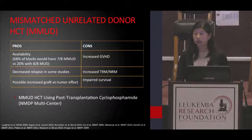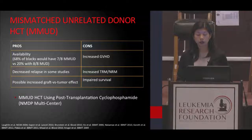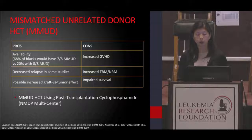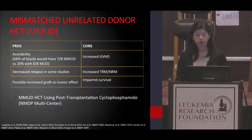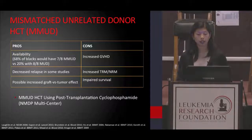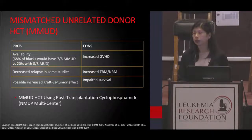The main benefits or strengths of the mismatched unrelated donor are availability to a larger proportion of people, and in some cases we've seen decreased relapse, which suggests possibly an increased graft-versus-tumor effect. There is currently an active study sponsored by the NMDP taking place at multiple centers that looks to address the issues with mismatch by combining it with a process called post-transplantation cyclophosphamide, a method of GVHD prophylaxis which has become very popular in recent years. The results of the study may help us clarify whether mismatched unrelated donors remain a prime alternative option.